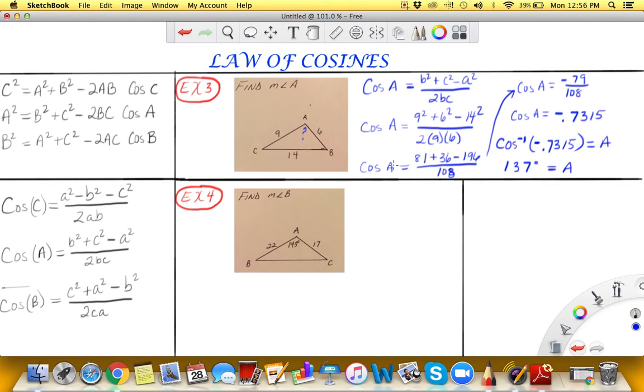When we transition into example four, this example has two parts. Notice in the previous examples they gave us all three side lengths. In example four we only have two of the lengths of the sides and then we have the angle included in them. So this is going to be a two-part problem.